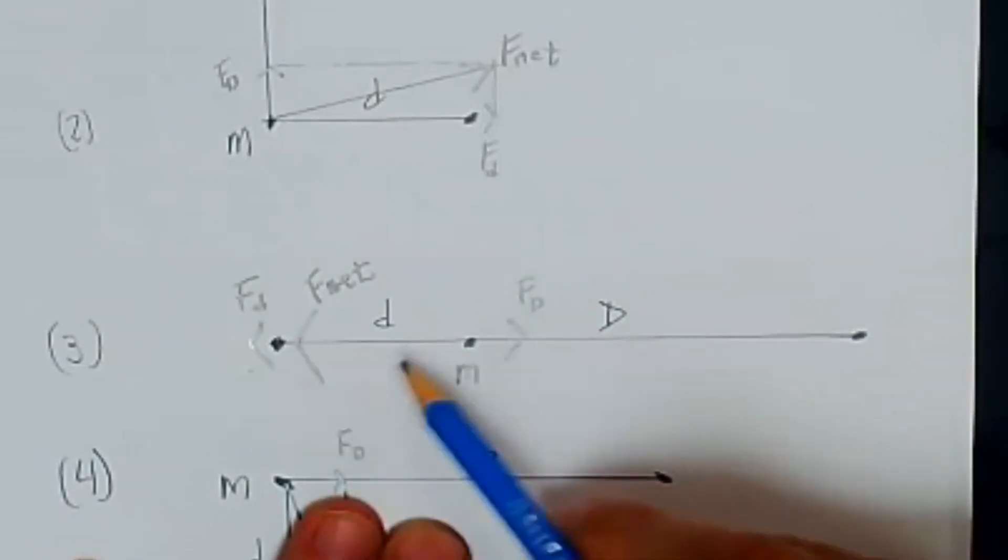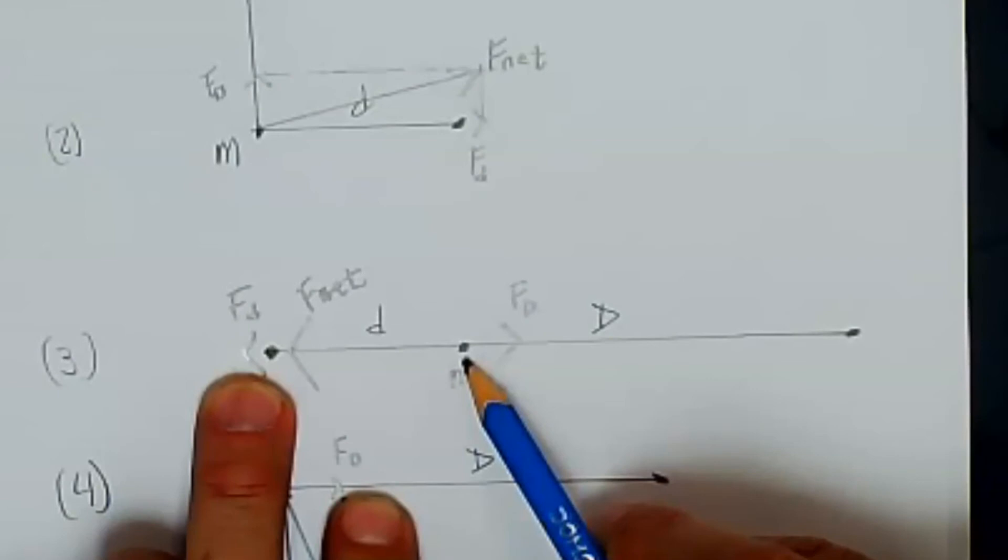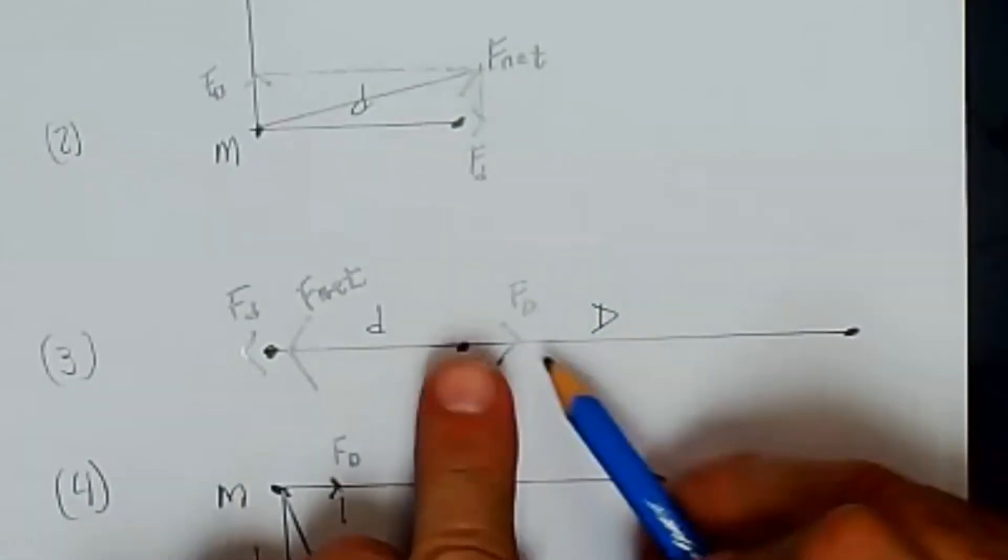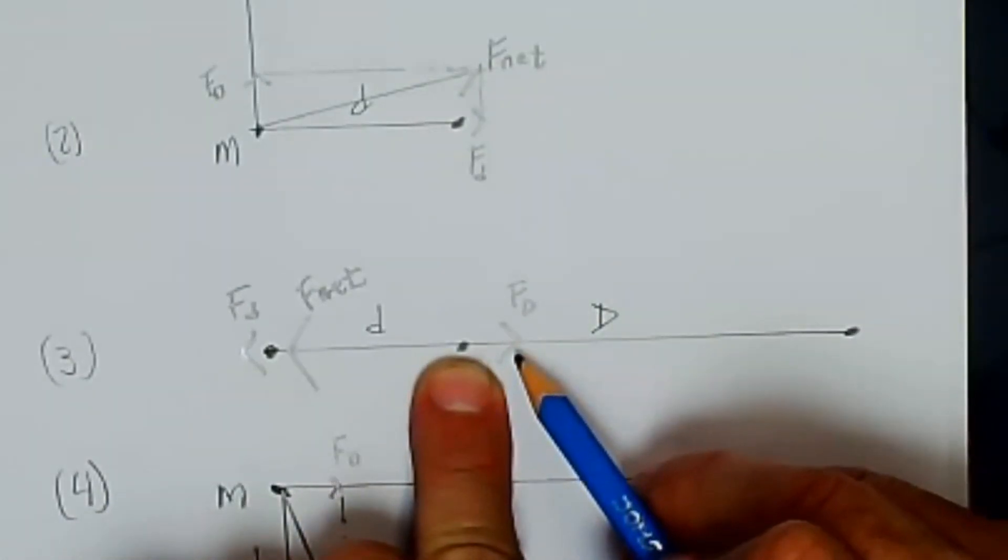So my little d has this magnitude of force. My big D has this magnitude of force, but they point in opposite directions.